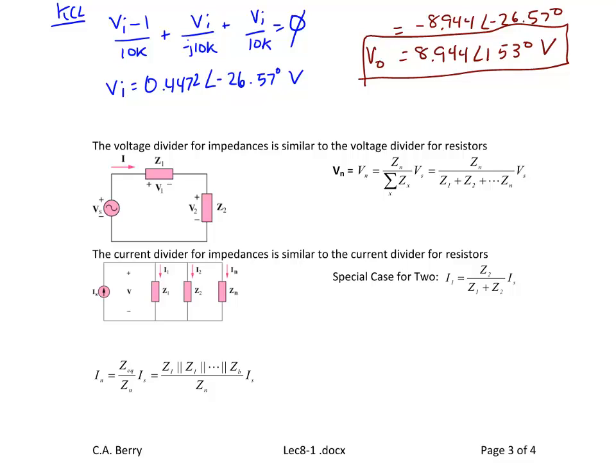Since KCL and KVL work in the phasor domain, the voltage divider and current divider are also applicable to impedances. For the voltage divider, VN = ZN / (sum of all impedances) × source voltage — simply replace R with Z. For the current divider with parallel impedances, the current through impedance N equals the parallel combination of all impedances divided by ZN times the source current. For the special two-impedance case, I1 = Z2 / (Z1 + Z2) × IS.